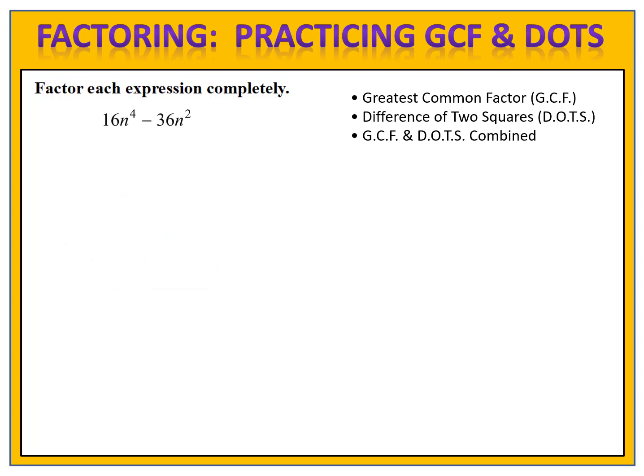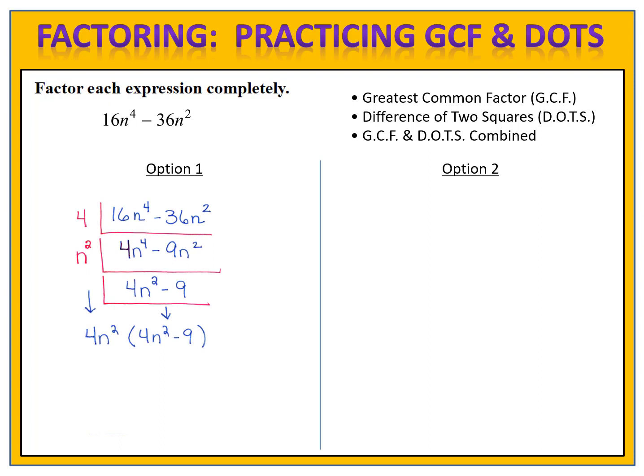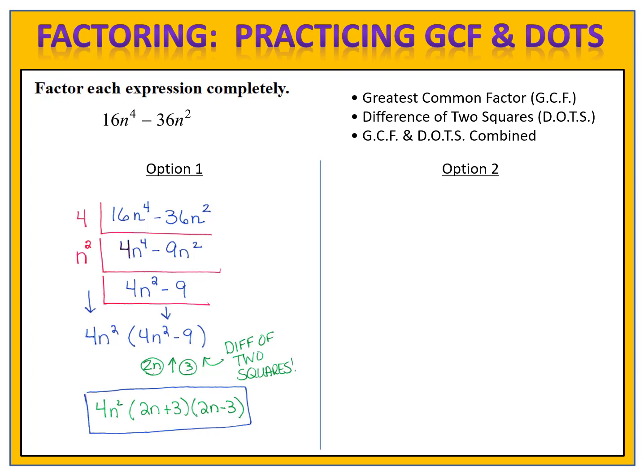Let's try one more problem. Here is a binomial with two different ways to factor it. Following the general advice of starting with the greatest common factor: the common factor is 4n². Factoring that out gives 4n² times (4n² minus 9) inside the parentheses. Inside is a difference of two perfect squares — 4 is a perfect square, n² is a perfect square, 9 is a perfect square, connected by subtraction — which factors into (2n plus 3)(2n minus 3). Don't forget to bring the 4n² down, giving the complete factored form: 4n² times (2n plus 3)(2n minus 3).